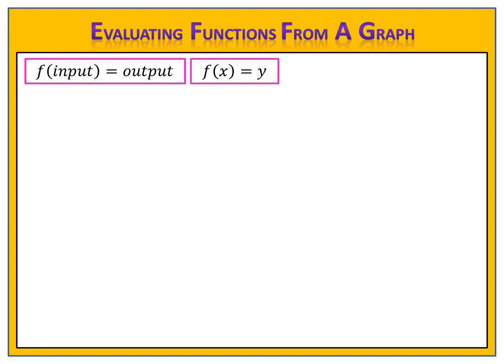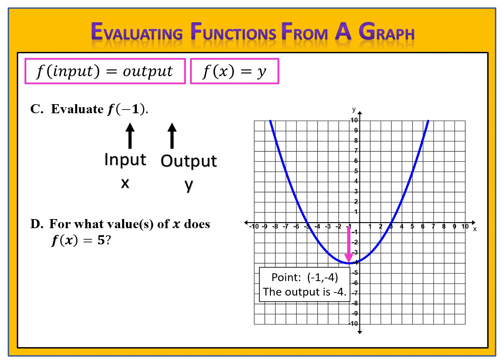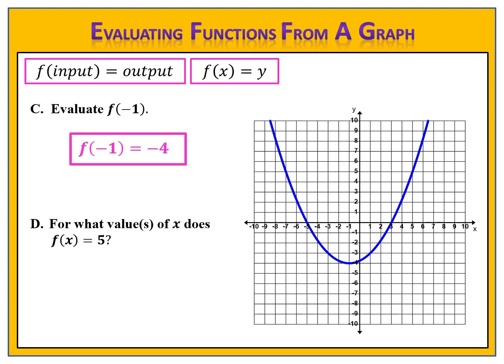Let's end today with one last example — kind of a self-assessment to see how you're doing. Here's a function shown on the graph and two questions related to it. Please pause the video, find the answers, and come back when you're ready to check. Evaluate f of negative 1: f of input equals output — input negative 1, we want to find the output. We go across the graph where the input is negative 1 and find the point (−1, −4). The input is negative 1 and the output is negative 4, so f of negative 1 equals negative 4.